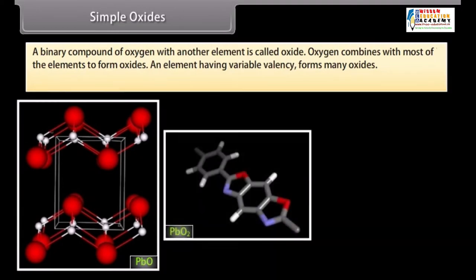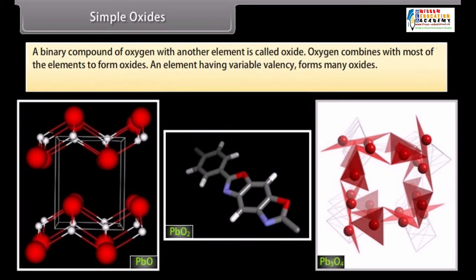An element having variable valency forms many oxides. For example, PbO, PbO2 and Pb3O4. On the basis of their nature, oxides can be classified as follows.